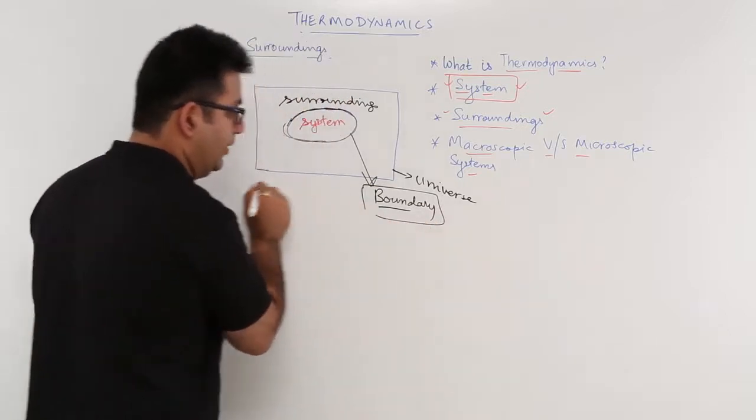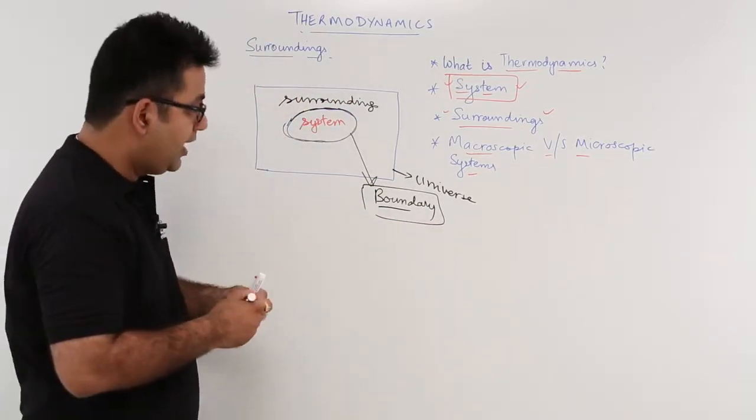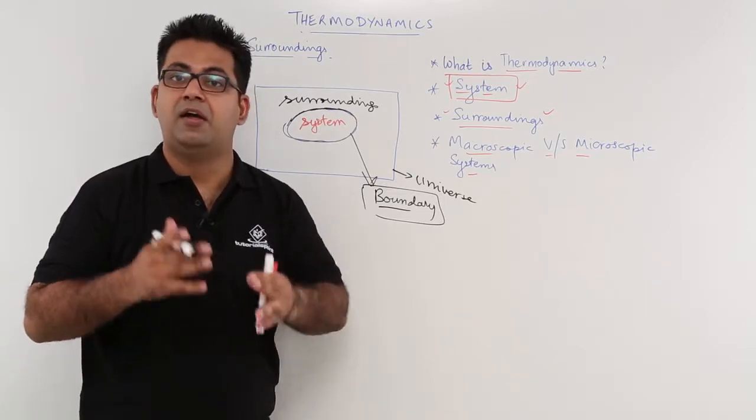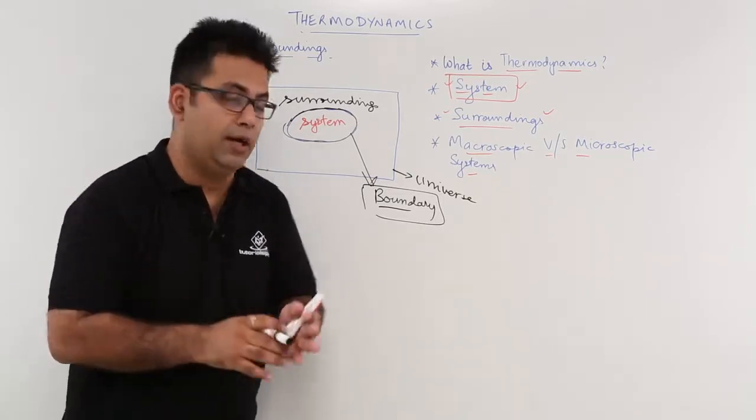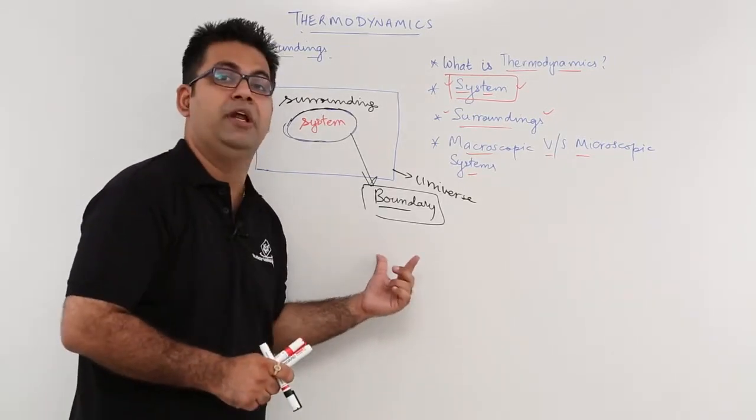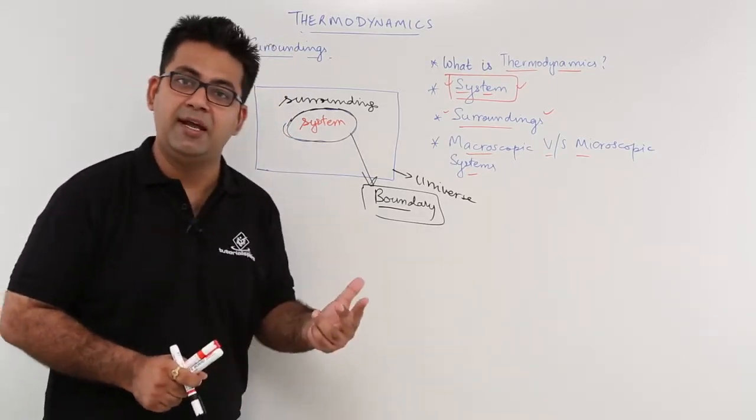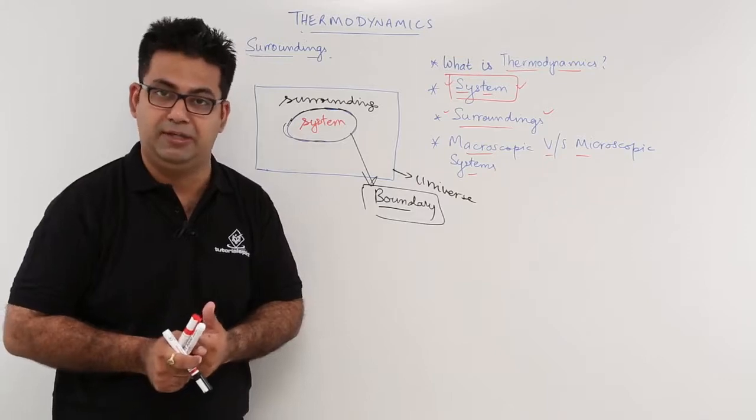This is a very important concept that you need to understand. Most of our thermodynamic occurrences or the thermodynamic phenomena would be visible on the boundary. This is a very important concept for understanding and for further thermodynamic studies.